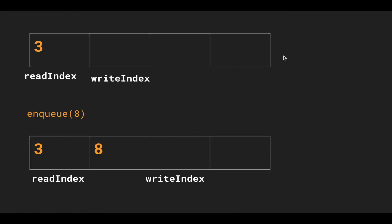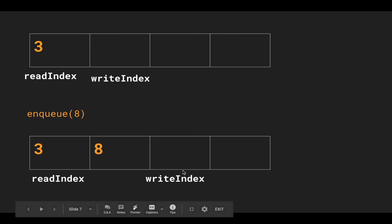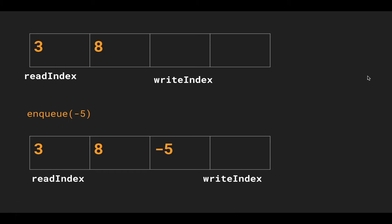Here is the array and the pointers from the previous state. Let's enqueue 8: we insert 8 into the element where write index is pointing, then advance it to the next one. Read index has not changed because we haven't dequeued anything from the circular buffer. Next, we enqueue negative 5 — we place negative 5 into the array where write index is pointing, then advance the pointer for the next enqueue operation.